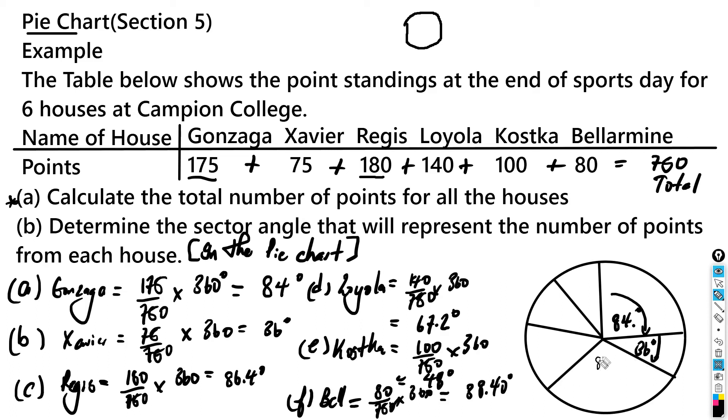Then here represents the 36 degrees. Here represents the 86.4 degrees. Then here represents 67.2 degrees. Then here represents 48 degrees, and here represents 38.40 degrees.